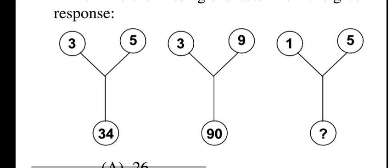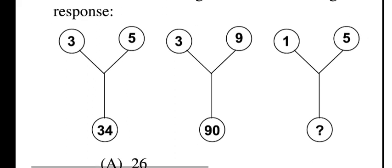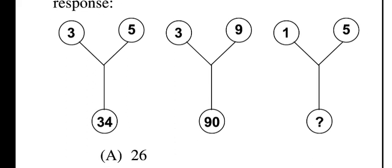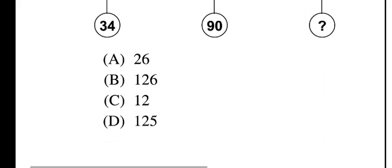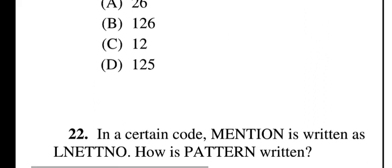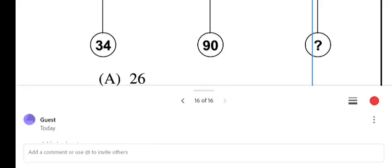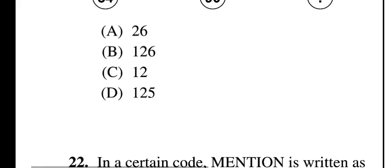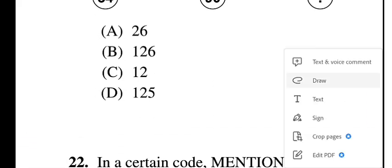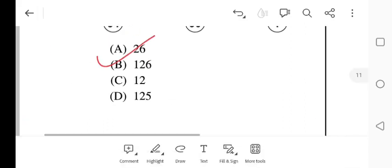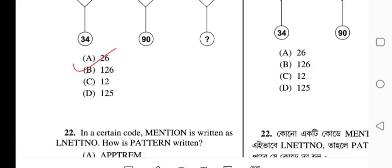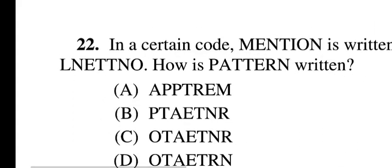Question twenty-one: find the missing character from a given figure. The table shows values: 3, 5, 34; 3, 9, 90; 1, 5, ?; with other values 26, 16, 12, 5. The correct answer is 26.